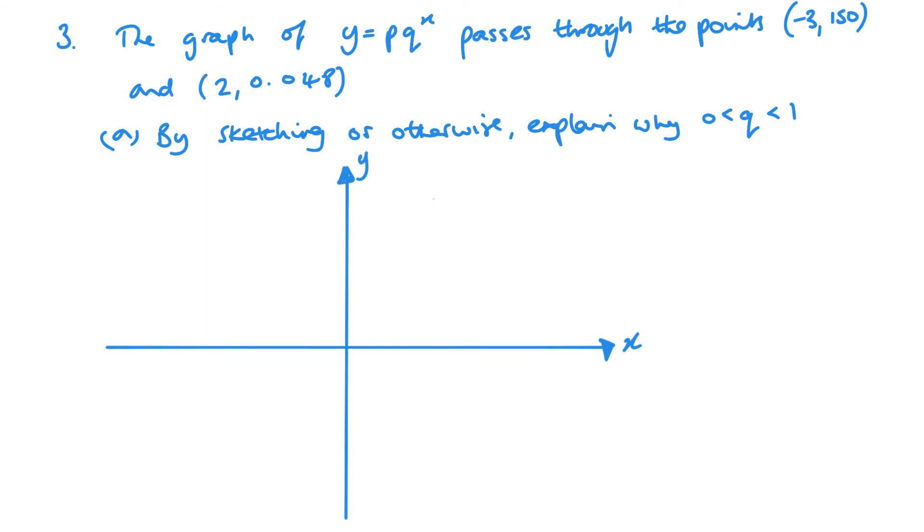For this one, if I'm looking at sketching, just look at the points. You've got minus 3, 150, which is a very large value. You've got 2, 0.048, which is a very small value. If you think of the shape of the graph, it looks something like this, and obviously it's going to carry on going towards that x-axis there.